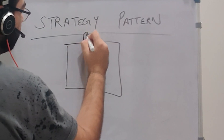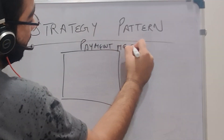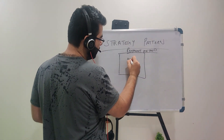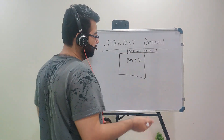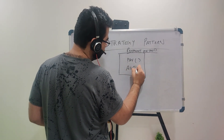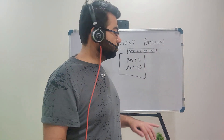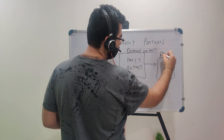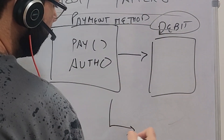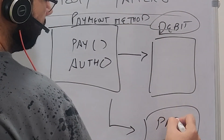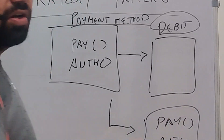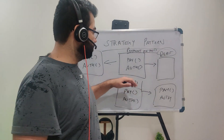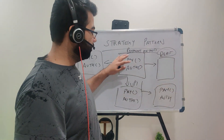Let's suppose you take a base class called the payment system itself — let's call it payment method. We define the functions which will be a part of it. One function that should definitely be there is pay, which will actually deduct the money, and another function would be authenticate. Various types of payment methods will derive from this base class: debit card, credit card, UPI, and net banking — each with pay and auth methods. This is the structure we create with inheritance.